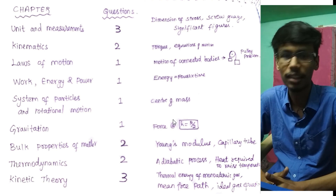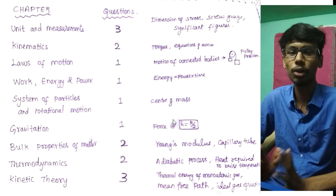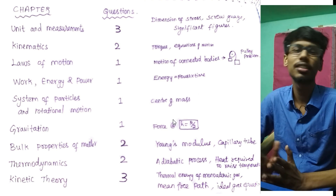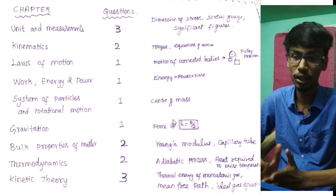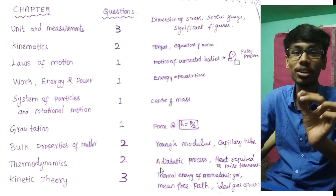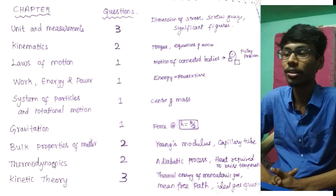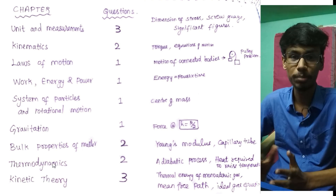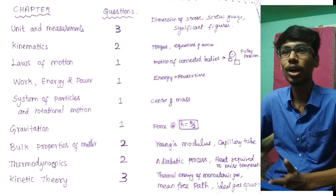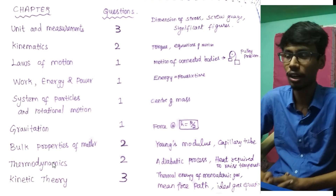Bulk Properties of Matter: two questions — one on Young's modulus and capillary tube. Then Thermodynamics, a very important chapter. Two questions: the adiabatic process definition — what is the adiabatic process — and one question on heat transfer to raise the temperature of spheres with two different radii. That is the amount of heat — a simple problem.